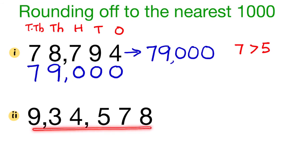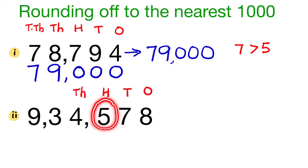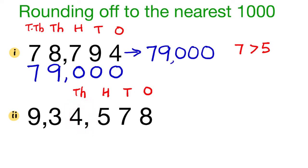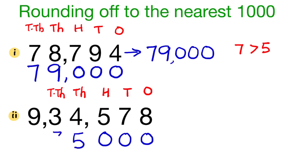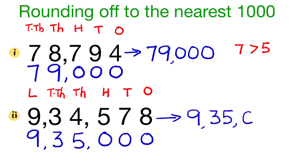Next number: 9,034,578. Since the digit in the hundreds place is 5, we add 1 to the digit 4 in the thousands place. So, the digit in the thousands place becomes 4 plus 1, which is 5. We write 0 in the ones, tens and hundreds place. We write 3 in the ten-thousands place and 9 in the lakhs place. The number 9,034,578 is rounded off to 9,035,000.